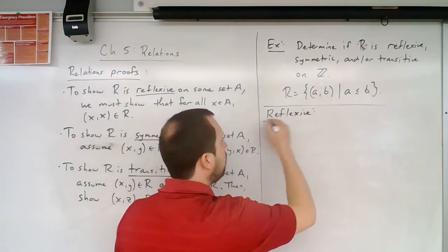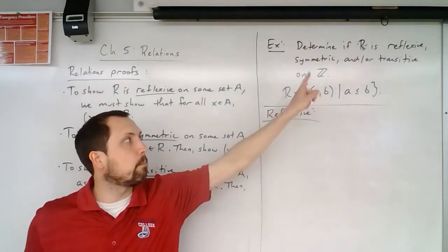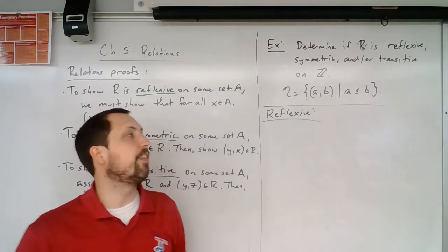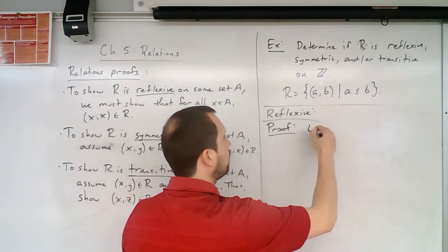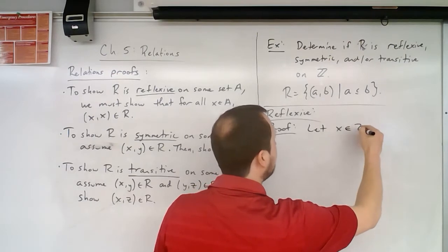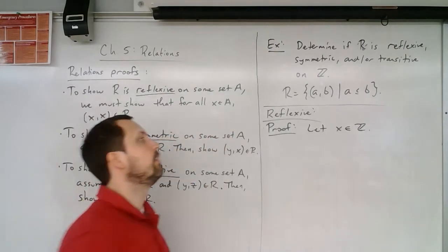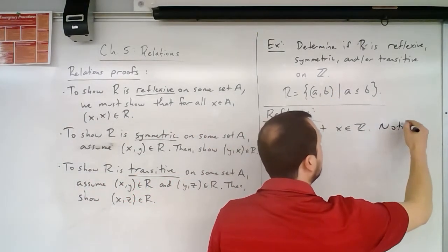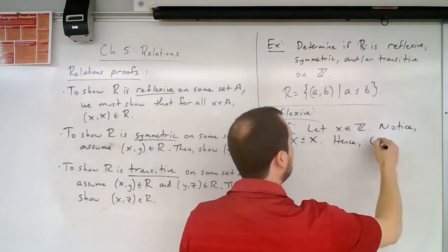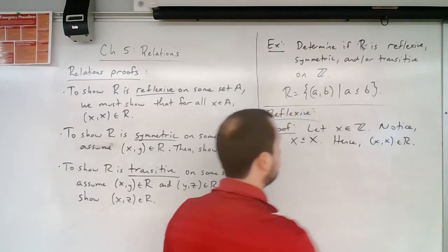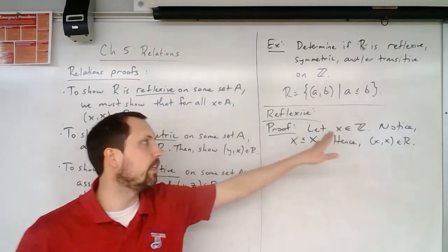For reflexive, we ask: is it true or false that every integer is less than or equal to itself? We should expect this to be true, so we write a proof. Let x be any element in ℤ. Notice that x ≤ x, hence (x, x) is in R. We've verified that any number is less than or equal to itself, so this relation is indeed reflexive.